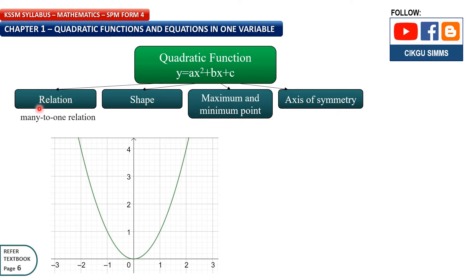The first thing is relation. This is an example of the graph of quadratic functions. x is the object — this is the x-axis — and this is the y-axis, and y is the image. So object is x, and image is y.